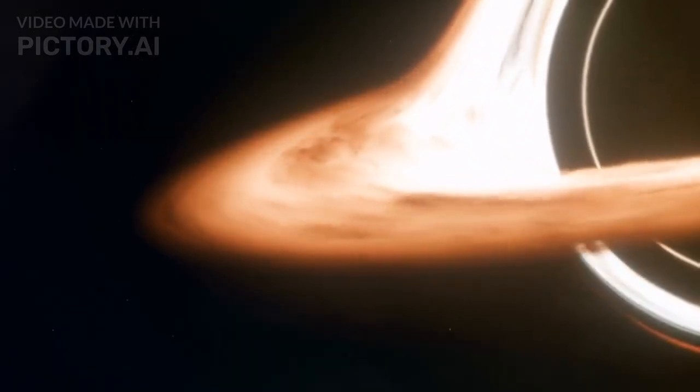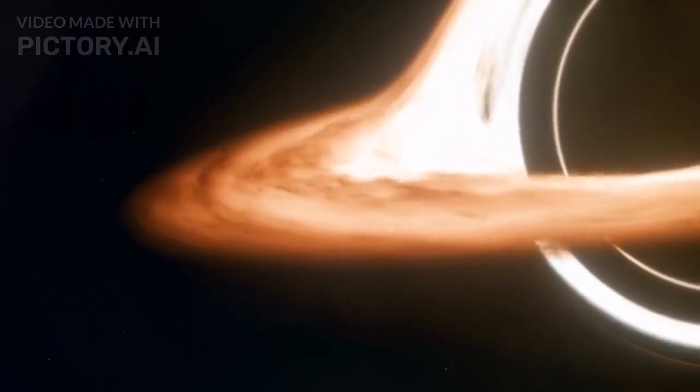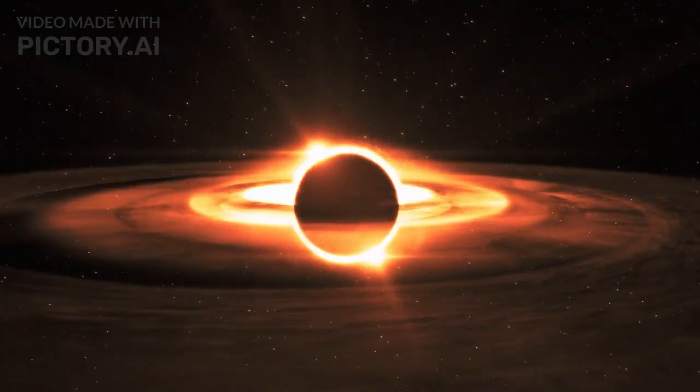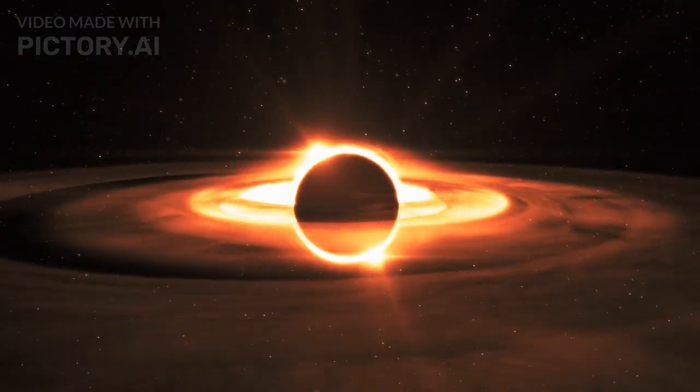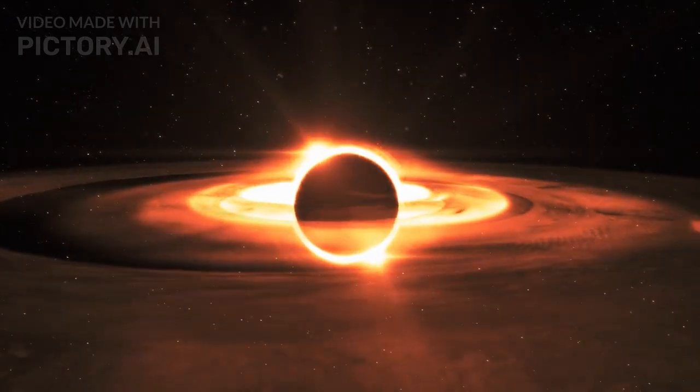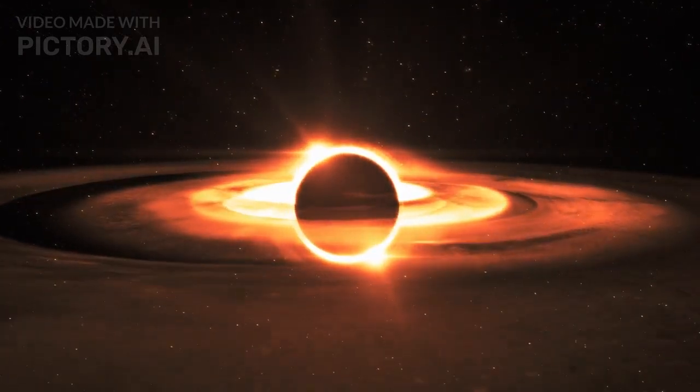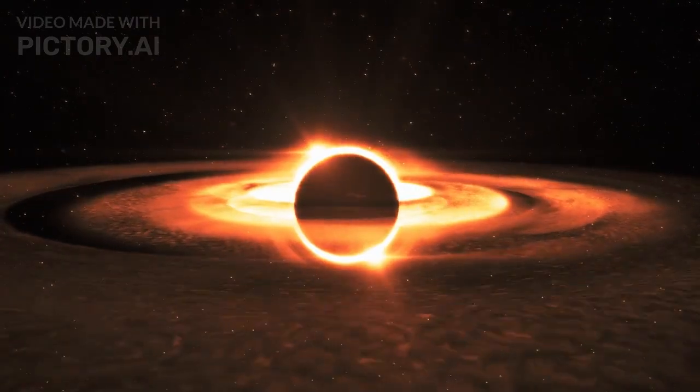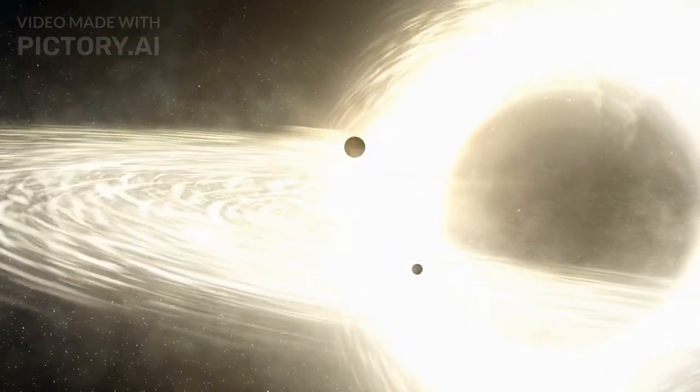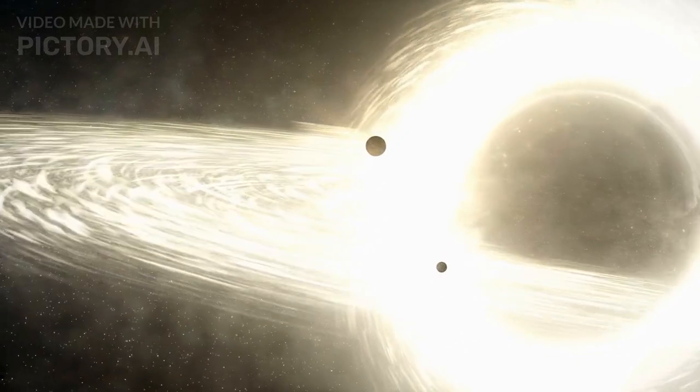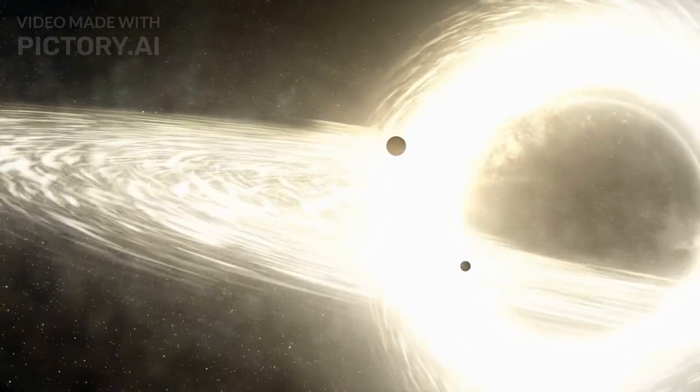Surrounding the singularity is the event horizon, the point of no return. Beyond this boundary, the gravitational forces are so overwhelming that objects are stretched and compressed in a process known as spaghettification. Once you cross the event horizon, there's no turning back. The very fabric of reality is twisted and contorted, creating a cosmic enigma that continues to baffle scientists.